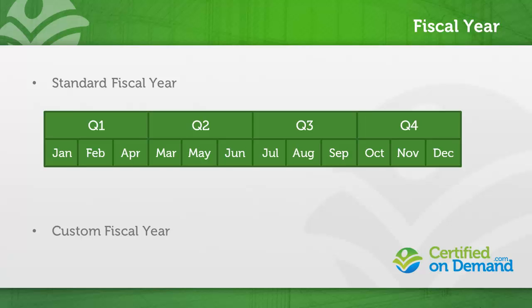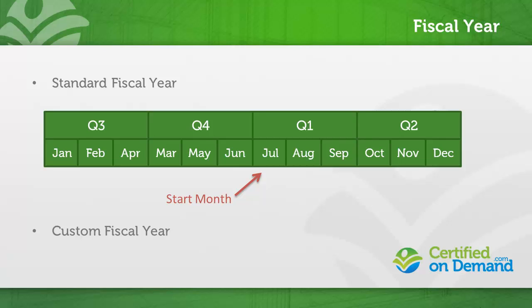A standard fiscal year is four quarters per year, three months per quarter, and you can set either the start month or the end month — so a fiscal year January through December, or July through June. If you wanted a fiscal quarter determined by number of weeks, you would need to use a custom fiscal year. The key thing to understand with custom fiscal years is that once you turn them on, you can't turn them off, and there are some implications for development and App Exchange compatibility. Also, changing fiscal years in general can cause you to lose data, so make sure to read up and be thorough before making any changes to a live environment.